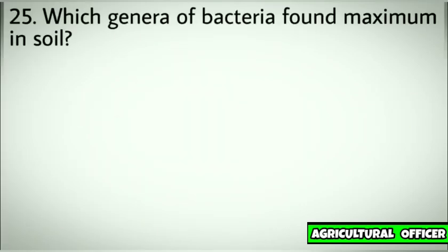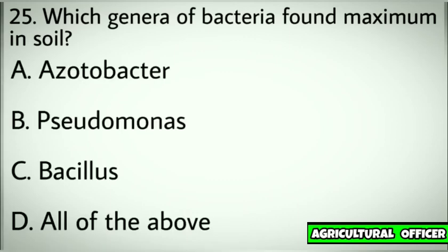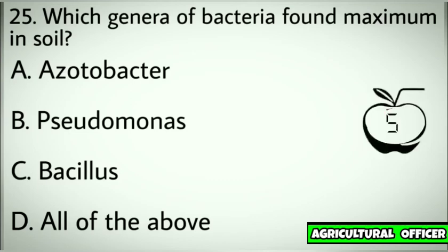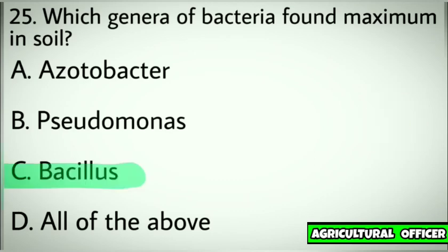Question number twenty-five. Which genera of bacteria is found maximum in soil? Options: A. Acetobacter. B. Pseudomonas. C. Bacillus. D. All of the above. Correct answer: C. Bacillus.